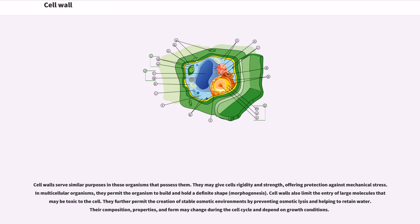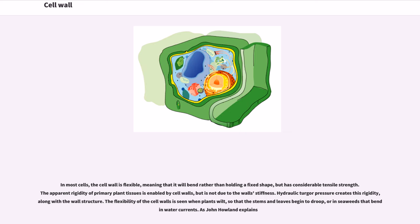Cell walls serve similar purposes in those organisms that possess them. They may give cells rigidity and strength, offering protection against mechanical stress. In multicellular organisms, they permit the organism to build and hold a definite shape, morphogenesis. Cell walls also limit the entry of large molecules that may be toxic to the cell. They further permit the creation of stable osmotic environments by preventing osmotic lysis and helping to retain water. Their composition, properties, and form may change during the cell cycle and depend on growth conditions. In most cells, the cell wall is flexible, meaning that it will bend rather than holding a fixed shape, but has considerable tensile strength.